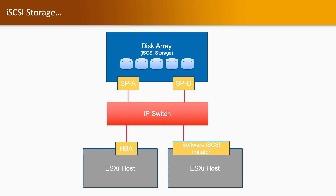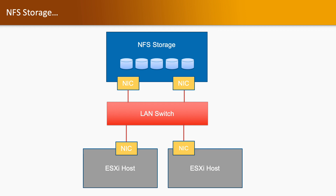Moving to iSCSI storage: we have a disk array, but that is not FC storage — we have iSCSI storage available. That iSCSI storage array is connected with the IP switch through the storage processor. And that IP switch is connected with the HBA card or software iSCSI initiator which is available on the ESXi host. Using that connection, we get the storage space. The last one is NFS storage, which is available on the network. It is connected with the ESXi host through the Ethernet port, and using that Ethernet port, ESXi gets the storage space from the NFS storage.